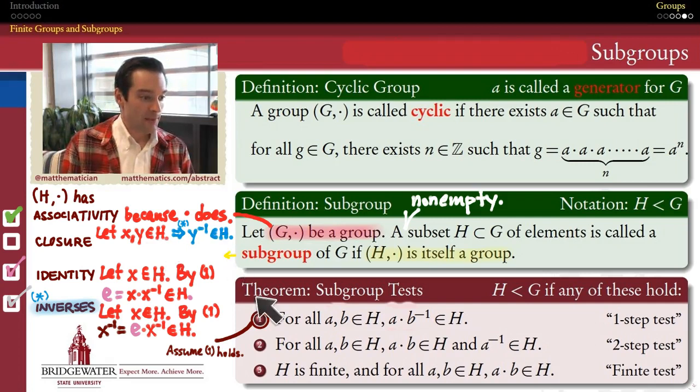All right, so I'm going to want to invoke this one-step test assumption again in this step. But because the one-step test assumption has an inverse on this b that I don't want to be there to meet my closure criterion, what I'm going to do is take one of my elements, say Y, and just replace it with its inverse. How do I know I can do that?